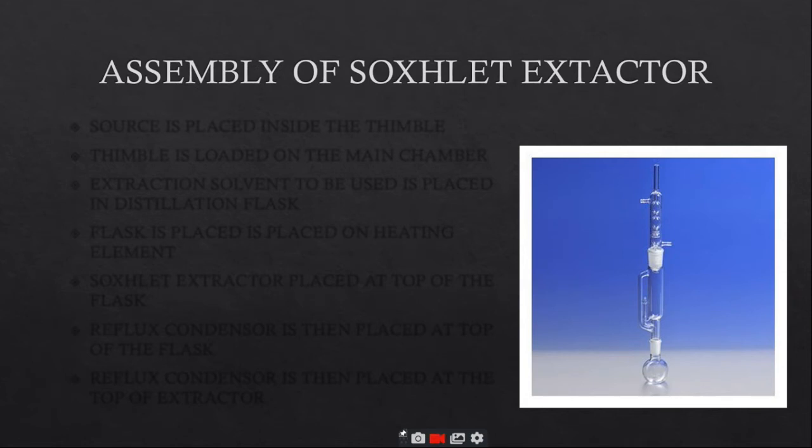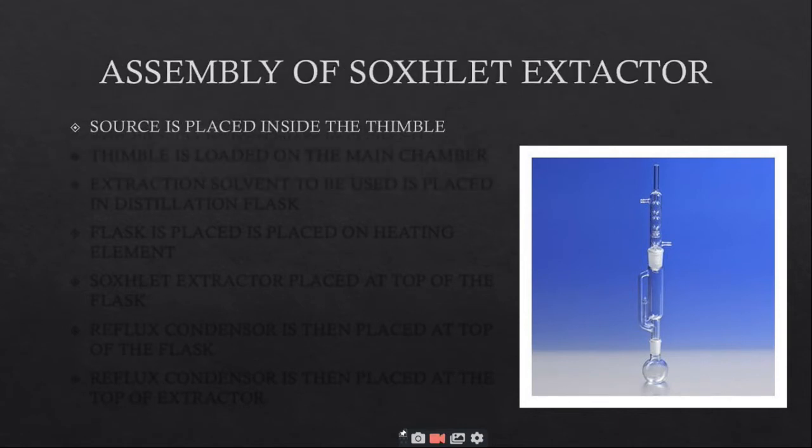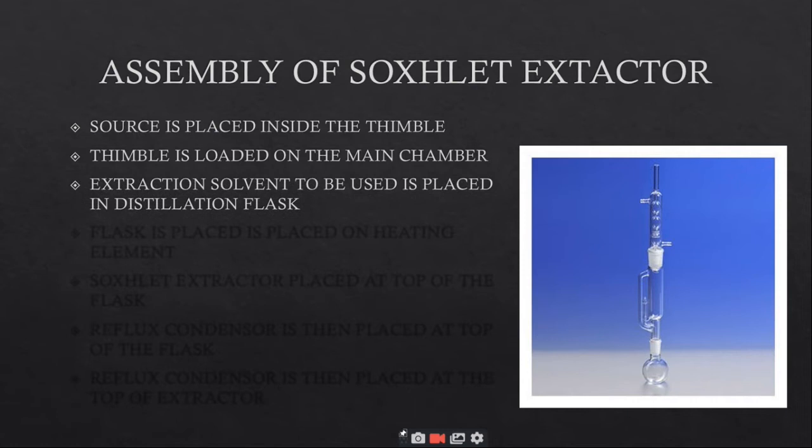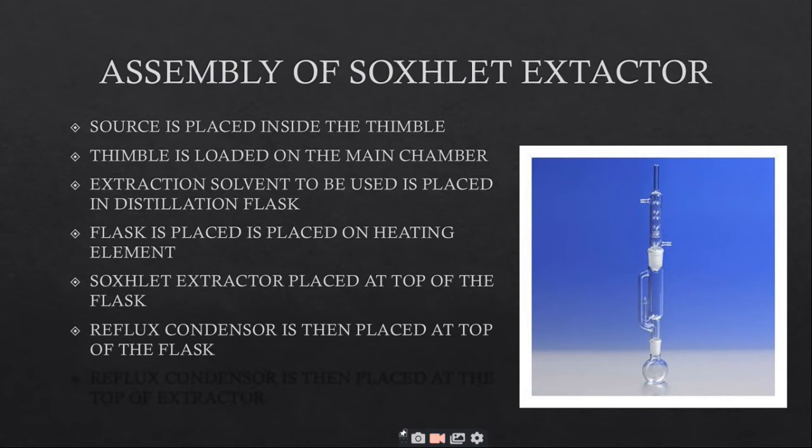How to assemble Soxhlet extractor? Source is placed inside the thimble. Thimble is loaded onto the main chamber. Extraction solvent is placed in distillation flask. Flask is placed onto the heating element. Soxhlet extractor is placed at the top of the flask.